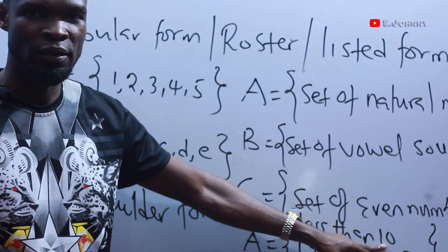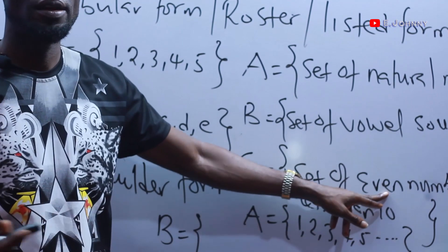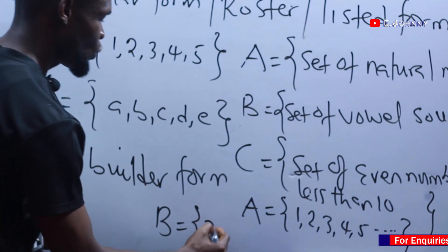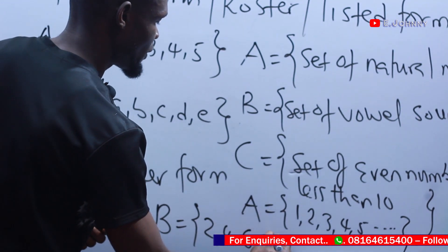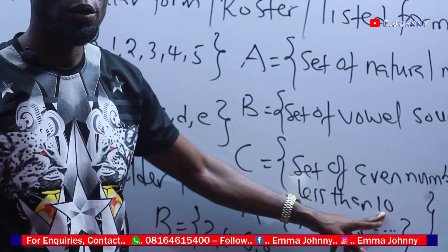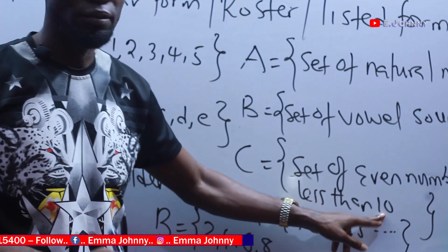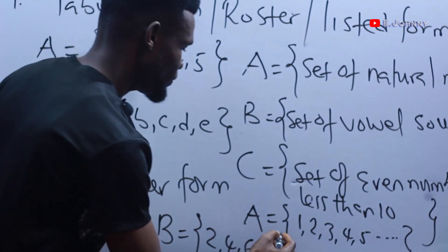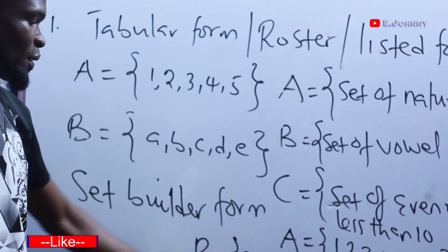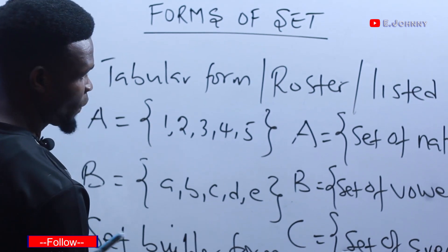Now if I say a set of even numbers less than 10, this one has an end. Even numbers are numbers divisible by 2, so the first even number is 2. We list: {2, 4, 6, 8}. We said even numbers less than 10, so 10 is not inclusive — the largest even number less than 10 is 8. So you stop there.